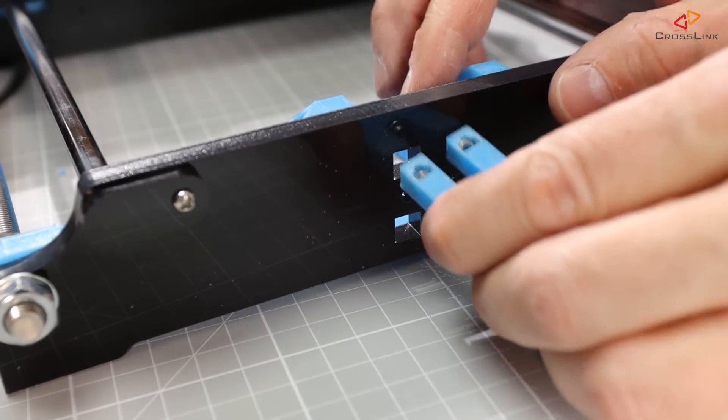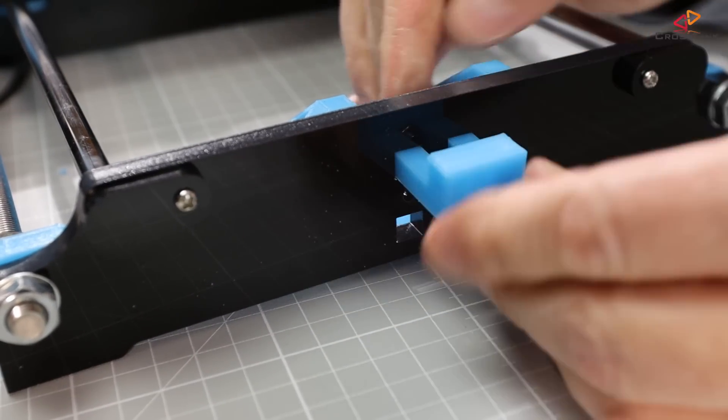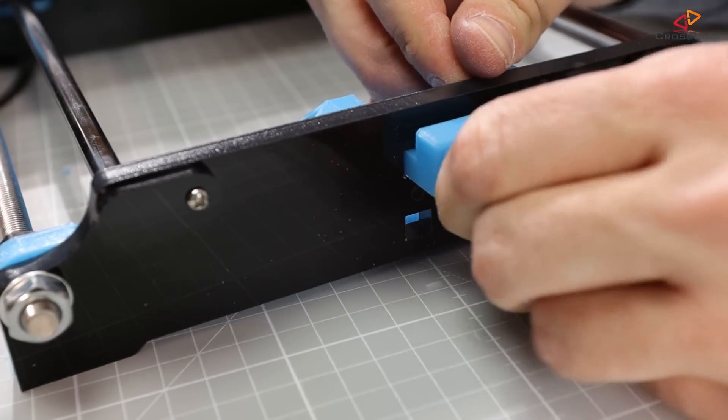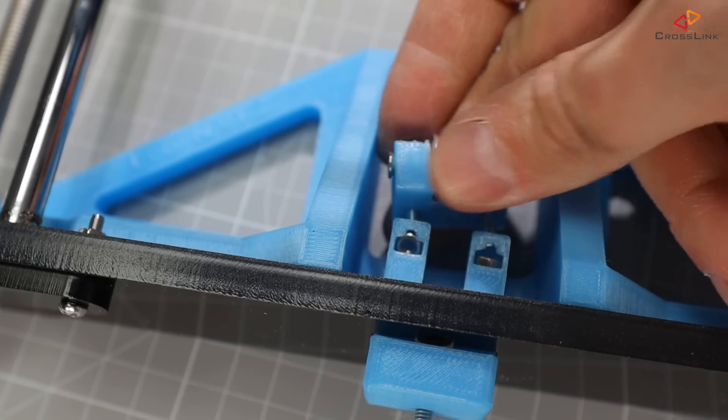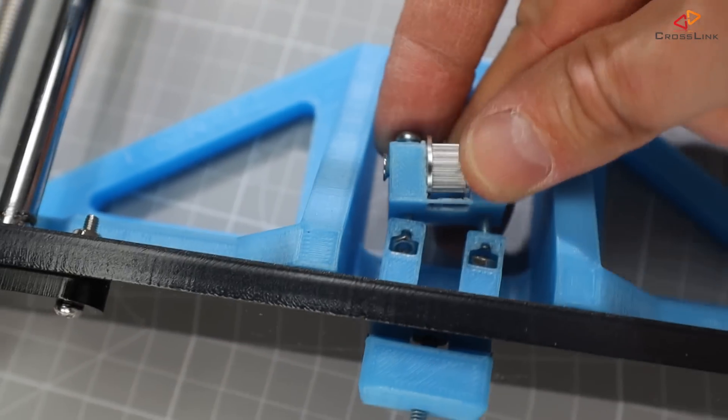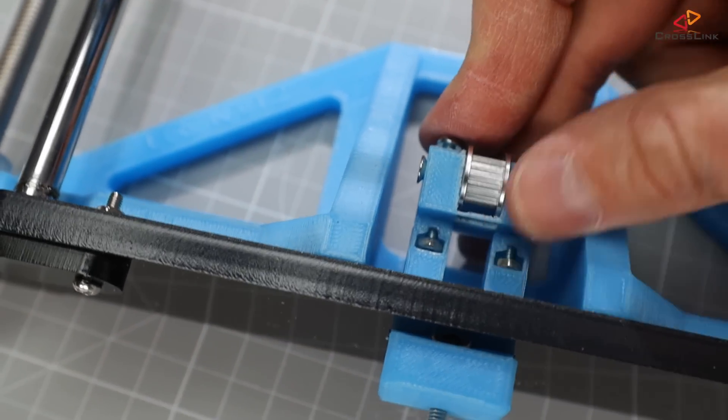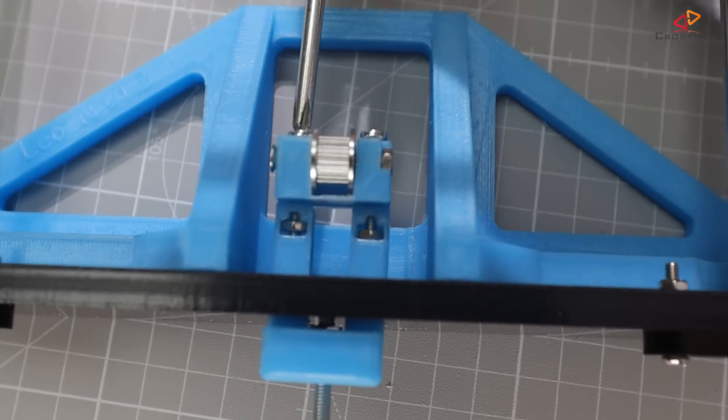Insert two M3 nuts into the little slots at the end of the belt tensioner, then push this part through the two openings at the upper side of the printer frame. Then fix the pulley counterpart to the tensioner part using two M3x20mm screws.